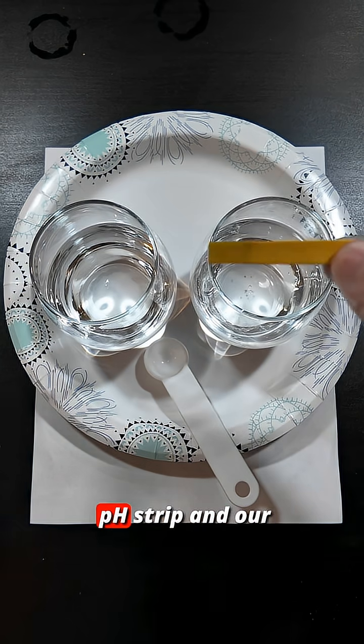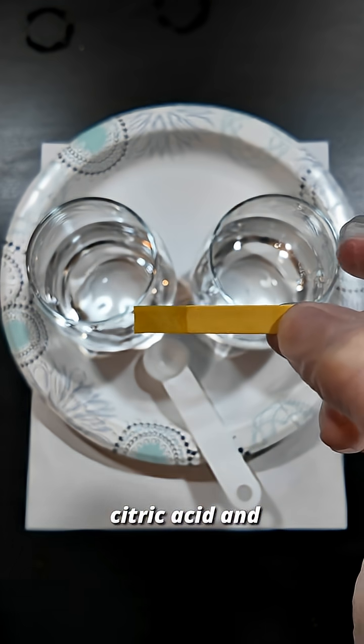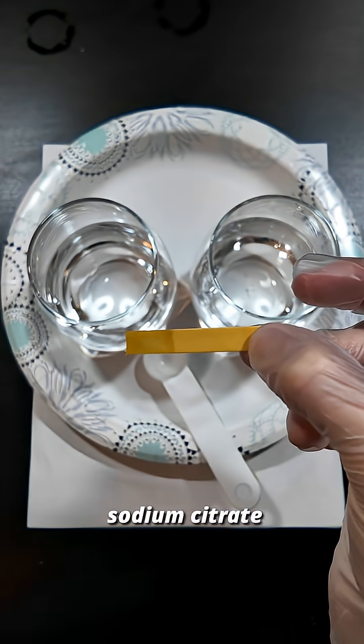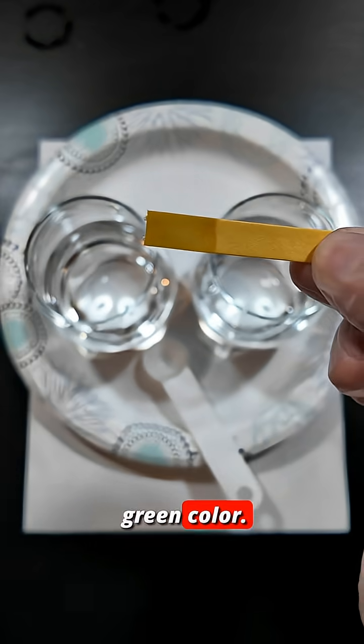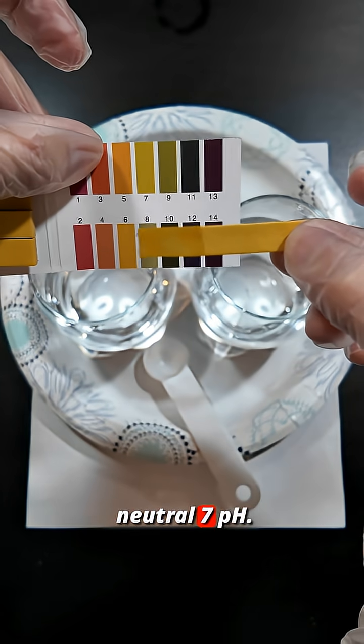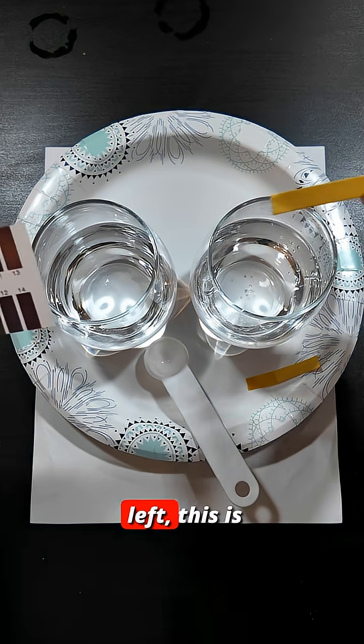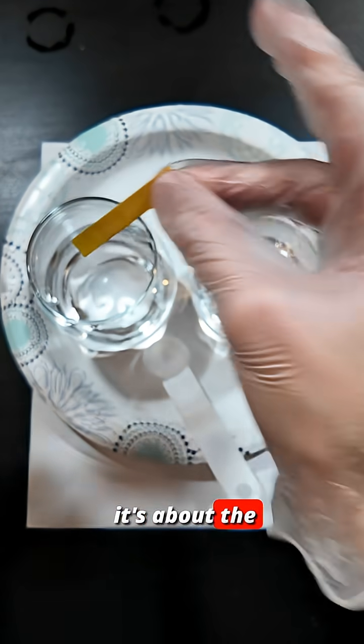So here I have a pH strip, and our citric acid and sodium citrate solution is this kind of green color. So it's about a neutral 7 pH. Over here on the left, this is just water, and it's about the same pH, right?